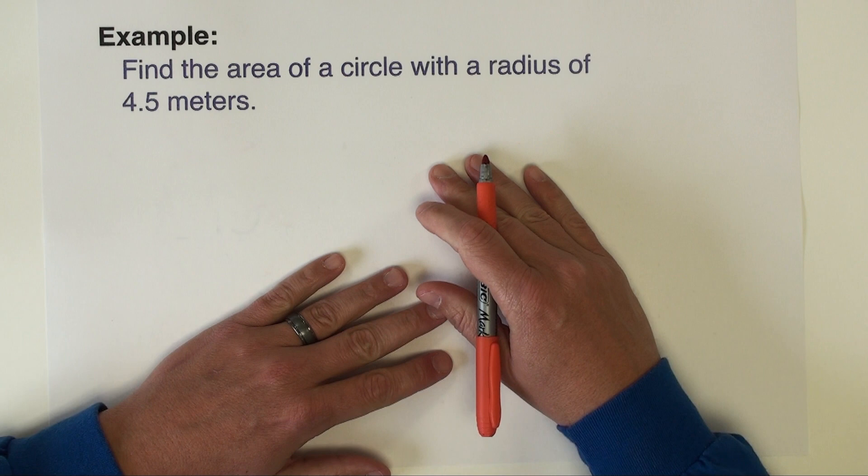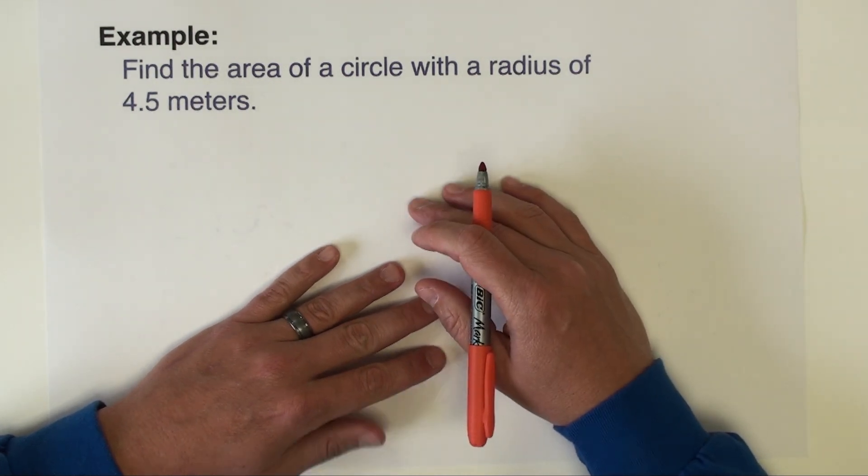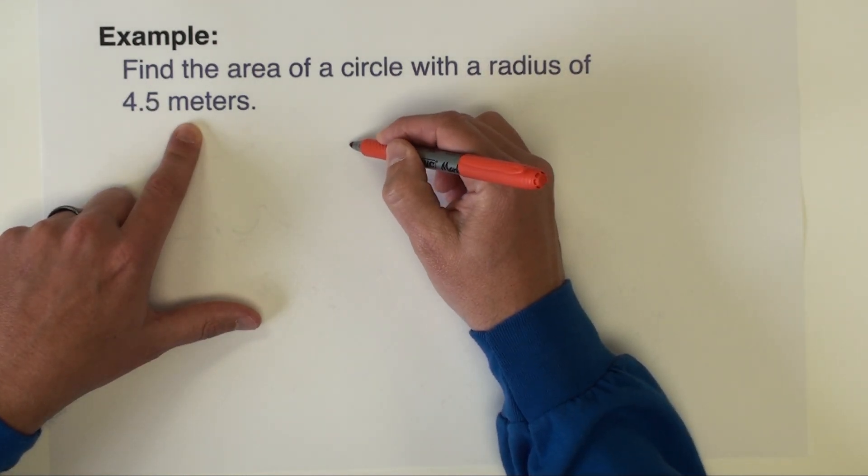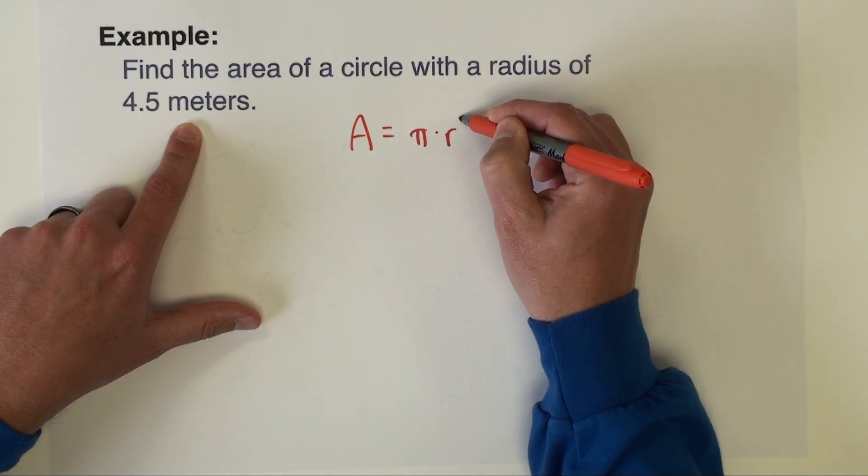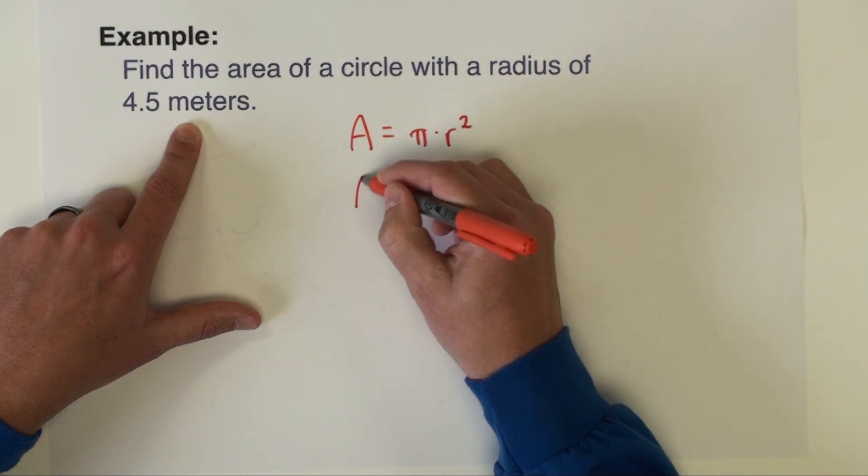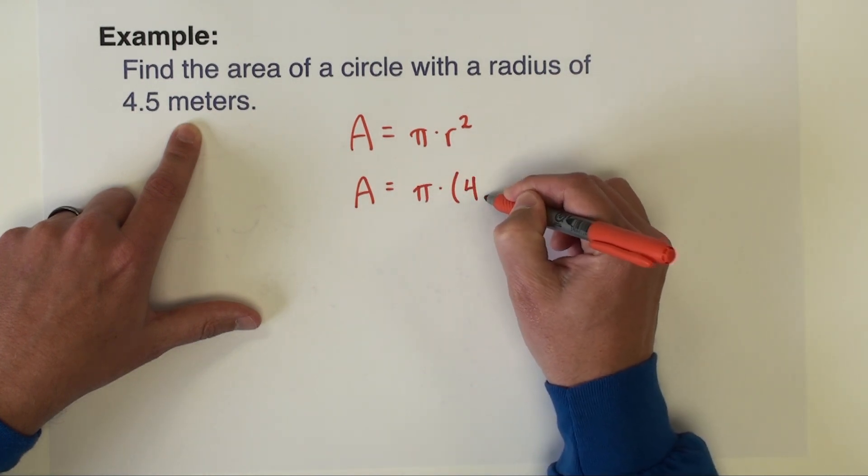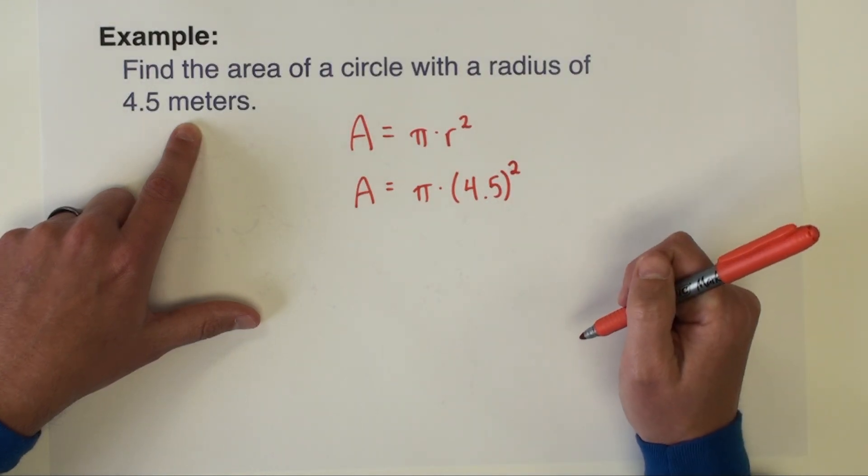All right, let's begin with a very easy problem to get us going. Directions are to find the area of a circle with a radius of four point five meters. So our area formula again is pi times radius squared. We want the area when the radius is four and a half or four point five. It's going to look like that.